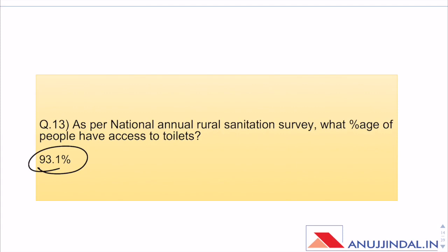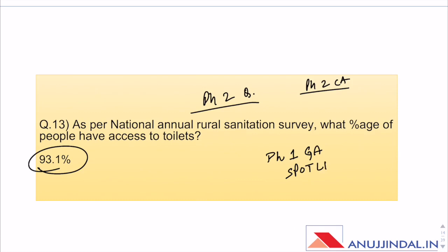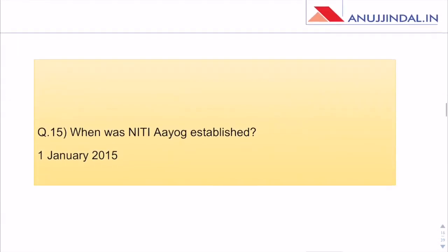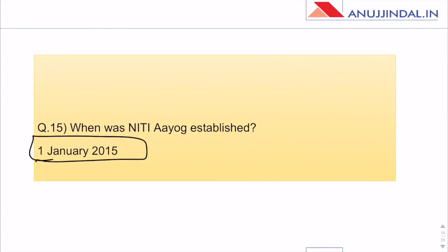As per the National Annual Sanitation Survey, what percentage of people have access to toilets? This looks like a Phase 2 question, but because my Phase 1 general awareness is so comprehensive, this was covered in Spotlight with all the major facts. That is the importance of Spotlight — it is not only helpful for Phase 1 general awareness but also for Phase 1 ESI and Phase 2 ESI.